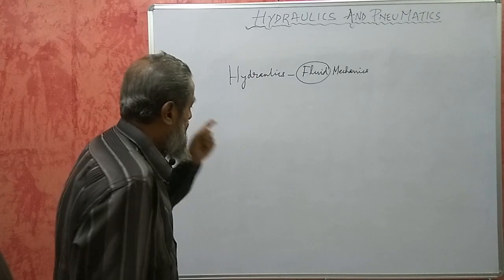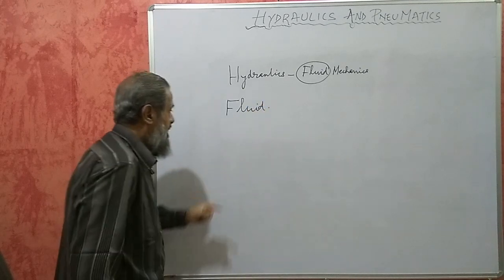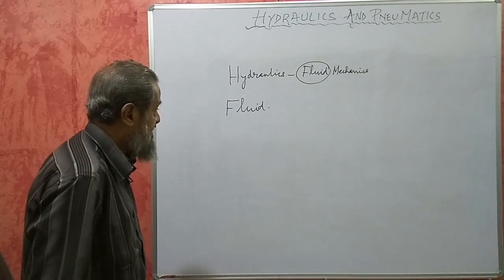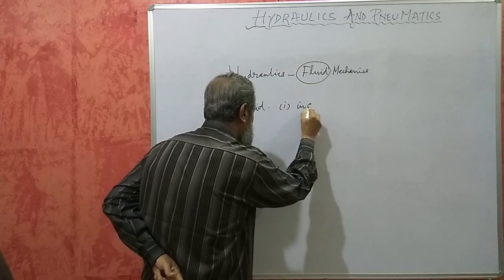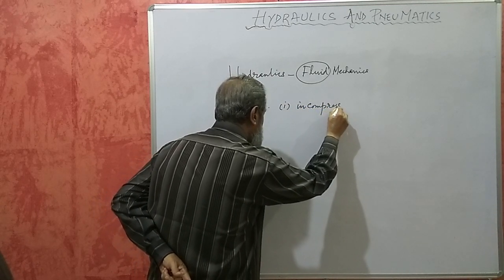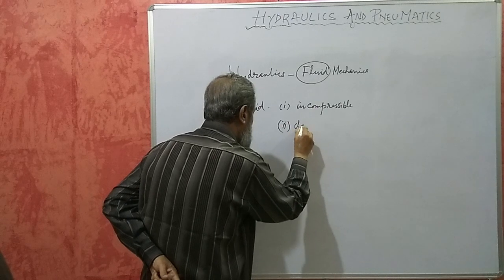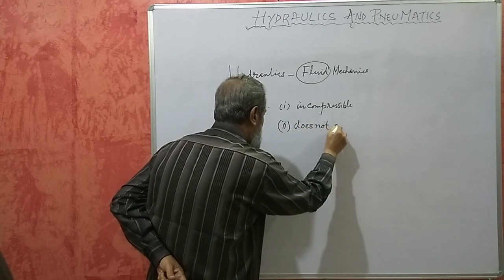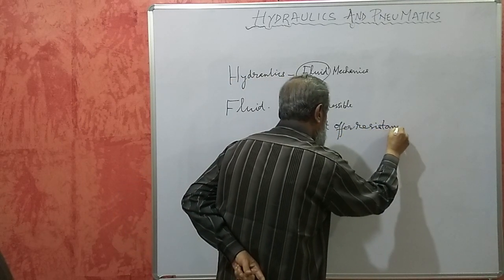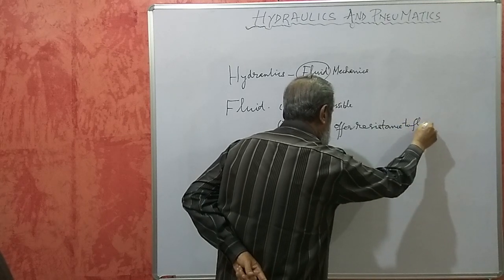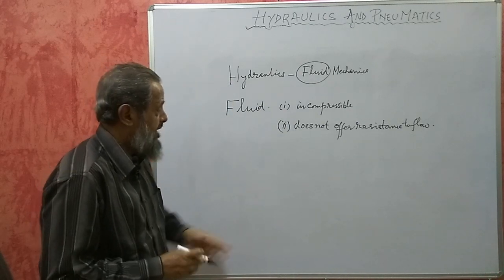Now let us see what is a fluid. A fluid is defined as a state of substance which has two properties: one, it is incompressible, and two, it does not offer resistance to flow. No resistance is offered to flow. So any state of substance which has these two qualities is defined as a fluid.